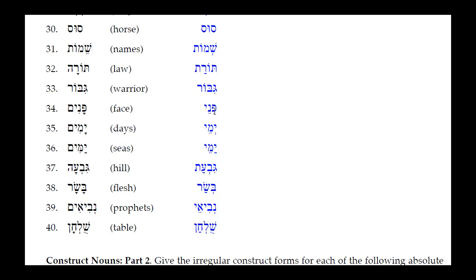Number thirty-three: Yamim — the Hirik Yod Mem Sofit drops off, a Seri Yod attaches, and the Kamets under the Yod in the open unaccented syllable reduces to a simple Sheva. Result: Ymei. Number thirty-four: Yamim — for seas. The Hirik Yod Mem Sofit drops off, Seri Yod takes its place, and the Patak remains the same. Result: Ymei.